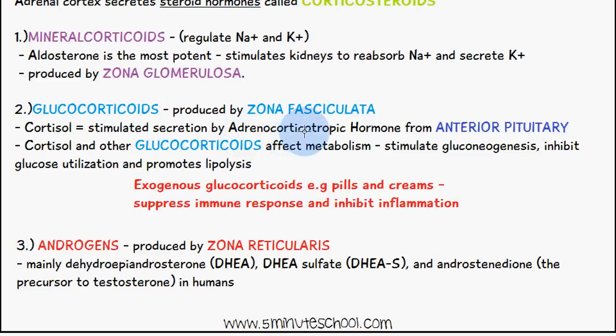The zona fasciculata, the middle layer, produces glucocorticoids. An example is cortisol, whose secretion is stimulated by adrenocorticotropic hormone (ACTH) from the anterior pituitary gland. Cortisol and other glucocorticoids affect metabolism: they stimulate gluconeogenesis, inhibit glucose utilization, and promote lipolysis. Exogenous glucocorticoids like pills and creams suppress immune response and inhibit inflammation.